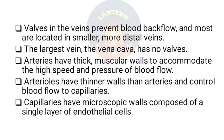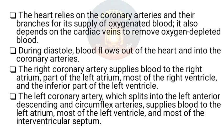Valves in veins prevent blood backflow and are mostly located in smaller, more distal veins. The largest vein, the vena cava, has no valves. Arteries have thick muscular walls to accommodate the high speed and pressure of blood flow. Arterioles have thinner walls than arteries and control blood flow to the capillaries. Capillaries have microscopic walls composed of a single layer of endothelial cells. The heart relies on the coronary arteries for oxygenated blood supply and on cardiac veins to remove oxygen-depleted blood.